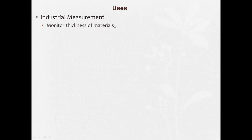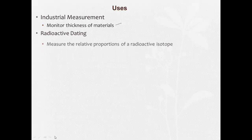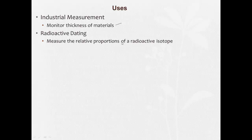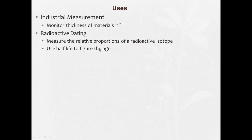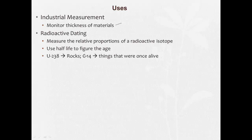Basic uses of nuclear chemistry. Industrial measurement — nuclear chemistry can be used to monitor the thickness of materials. Radioactive dating: measure the relative proportions of a radioactive isotope to figure out how old it is using half-life. Things like uranium-238 are useful for rocks and things that weren't living. Carbon-14 is used for things that were once alive.